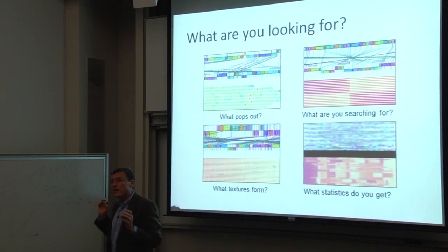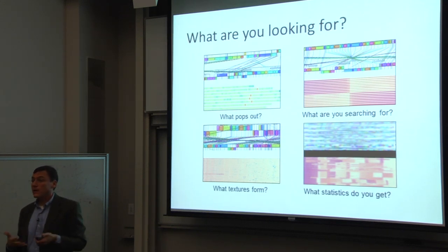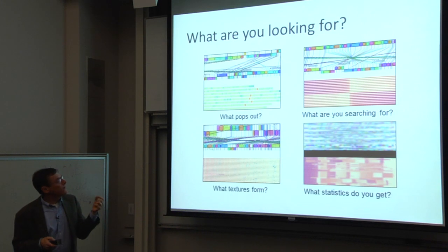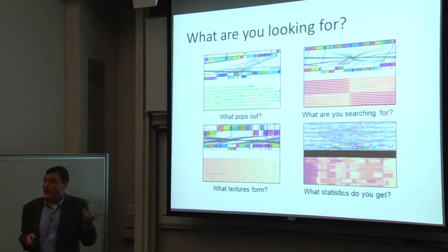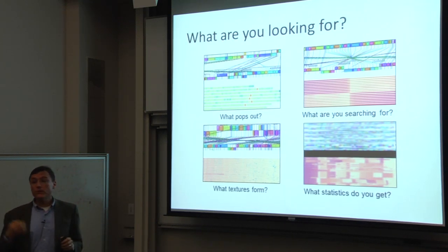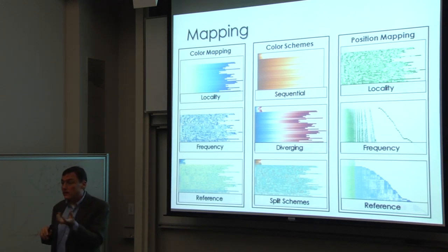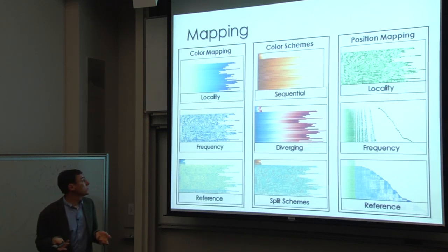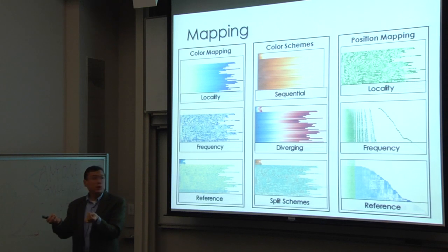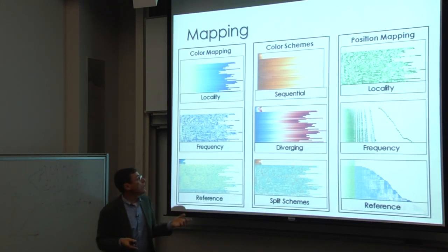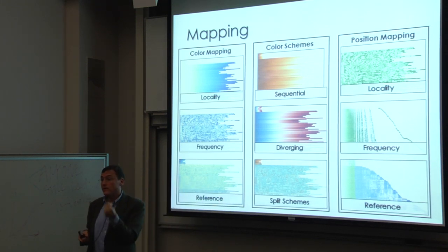We need to come up with designs that when you squint at them still give you meaningful big-picture information rather than just turning into gray mush. All these tricks give us ways of making things easier to see if you know what you're trying to find. But if I don't know what you're looking for, I don't know what to make pop out. So the next trick is to build flexible ways for users to decide what's going to pop out — by thinking about how the data gets mapped onto visual representations, including color mappings, color schemes (uniform, split, diverging), and different orderings.